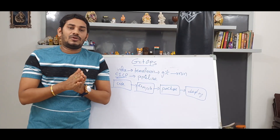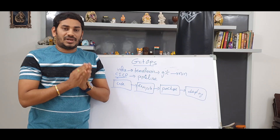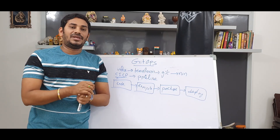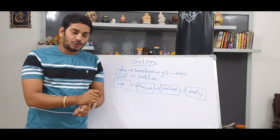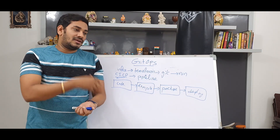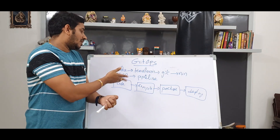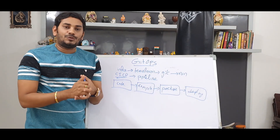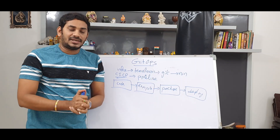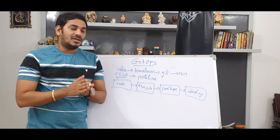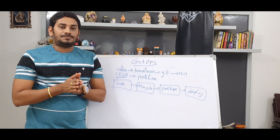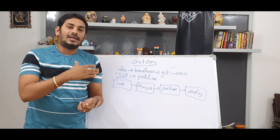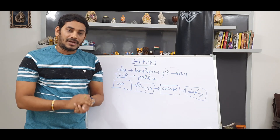GitOps is a practical, perfect implementation of DevOps. Whatever you do - either infrastructure or application development - the single source of truth should be Git. You write declarative things like Terraform, Ansible, or Jenkins CI/CD pipelines - everything should be stored in Git and considered as single source of truth. That is why it is called GitOps. So the difference is: DevOps is a culture, and GitOps is the practical, perfect implementation of DevOps.